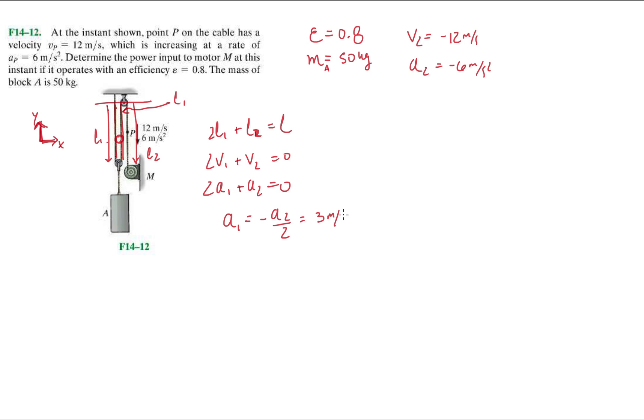When I plug it in, I'm going to end up with a positive value here, which is 3 meters per second squared, because as P goes downwards with an acceleration of 6 meters per second squared, the points along the two L1s are going to be accelerating upwards.